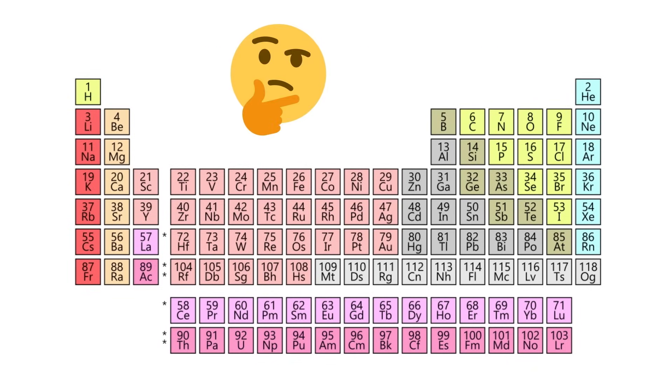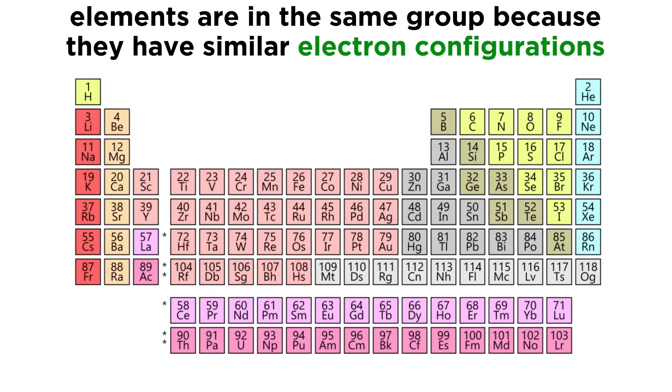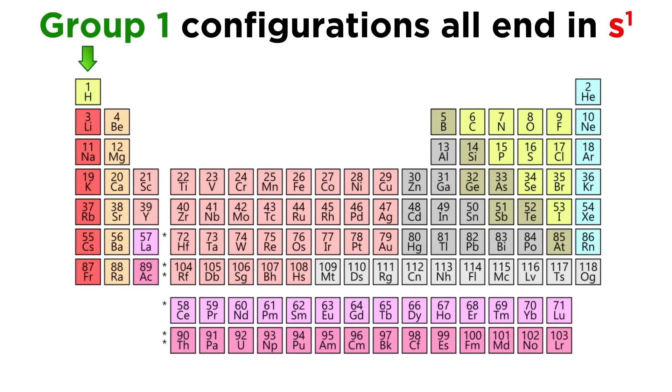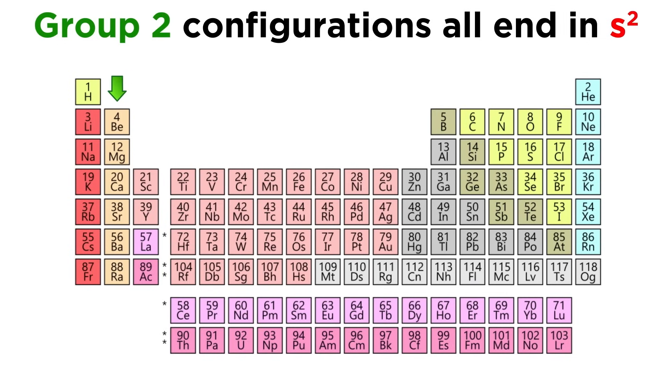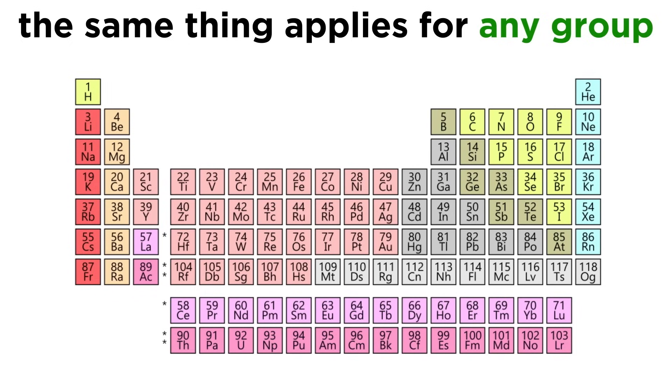We can now begin to see the reasoning for the structuring of the periodic table. Elements that are in groups together were placed as such on the basis of exhibiting similar behavior. It turns out that they do so because they have similar electron configurations. Specifically that they have the same number of valence electrons, which are the electrons in the outermost shell. In group one, all the configurations end in s¹. In group two, they end in s². You can see that in every group the electron configurations end the same way as the other elements in that group.